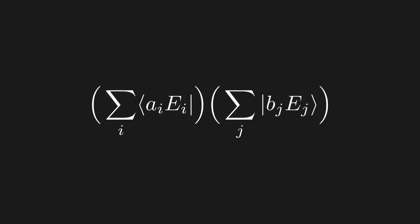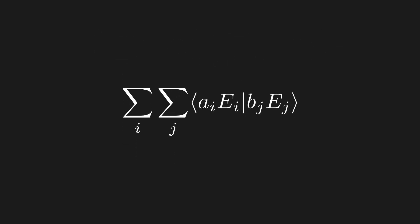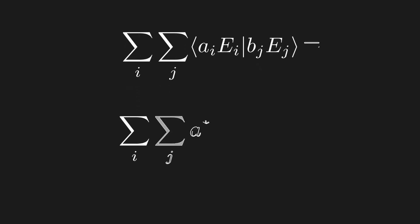First, remember that the inner product of a sum of vectors is the sum of the individual inner products. So, we get a double sum. Next, remember that the right slot is linear, so we pull out the b coefficients. And, on the other hand, the left slot is antilinear, so we pull out the a coefficients and conjugate.